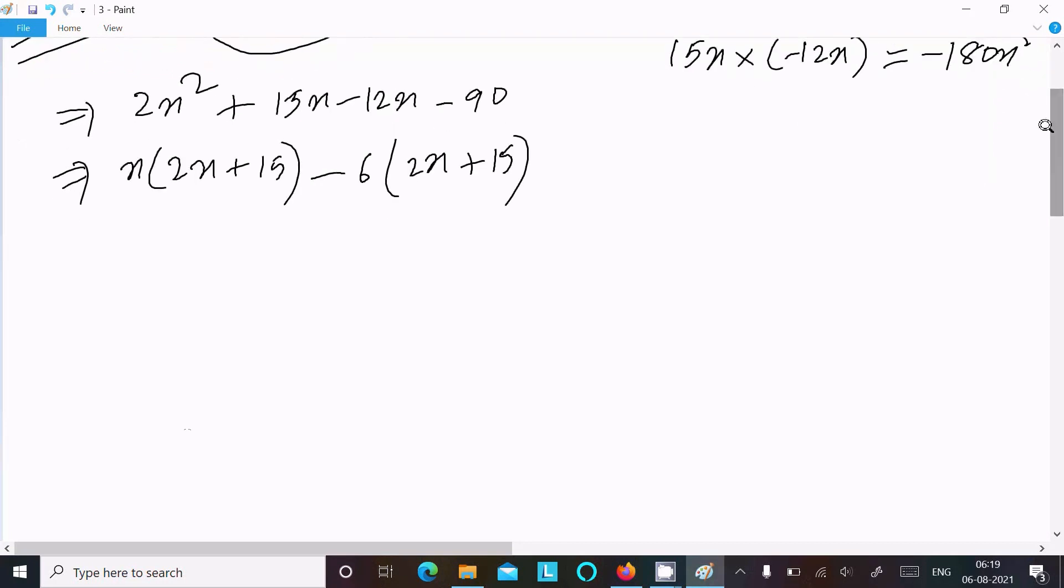After that, 2x + 15 is common in both terms, so taking 2x + 15 common, we get (2x + 15)(x - 6). This is the answer to this question.